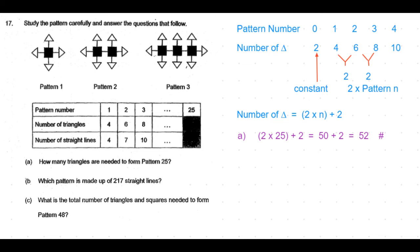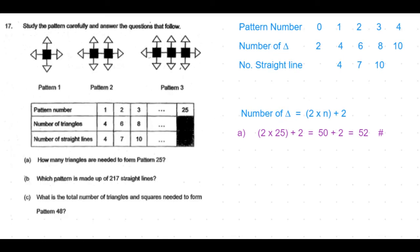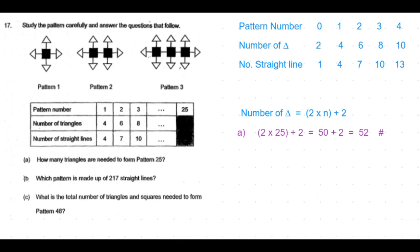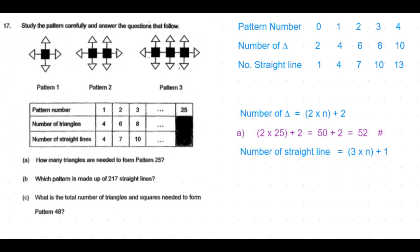Now let's look at the second question: which pattern is made up of 217 straight lines? The number of straight lines is given as 4, 7, 10. The number of straight lines is increasing by 3 — this is also a constant difference. For pattern zero, the number of straight lines is 4 minus 3, which is 1. So the constant is 1, and the number of straight lines becomes 3 times n, since 3 straight lines are added per pattern.